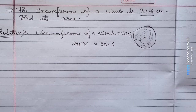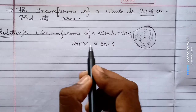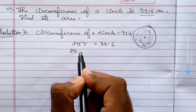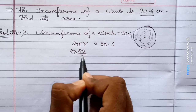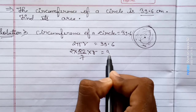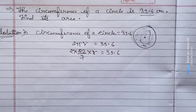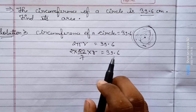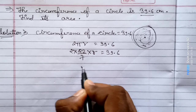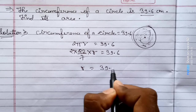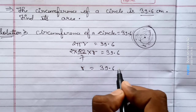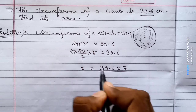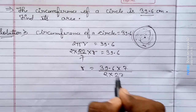If we have the radius of the circle, we can find the area. The circumference formula is 2 into pi into r, which equals 39.6. So 2 into 22 by 7 into r equals 39.6. We transfer all values to find r.